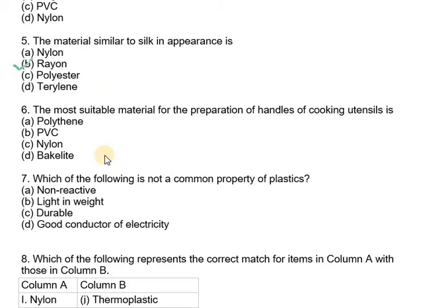The sixth part says the most suitable material for the preparation of handles of cooking utensils is: polythene, PVC, nylon, or bakelite. We know that bakelite is actually a very poor conductor of heat and electricity, therefore it is used to make switches, handles of cooking utensils, and many other things.